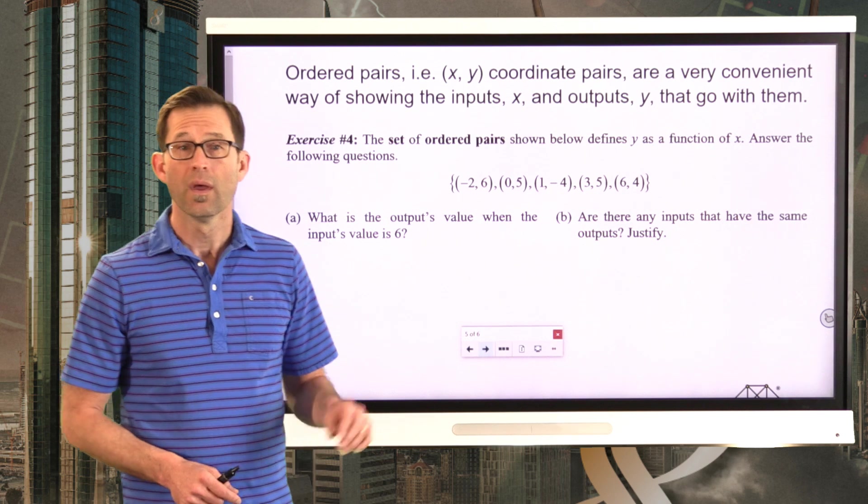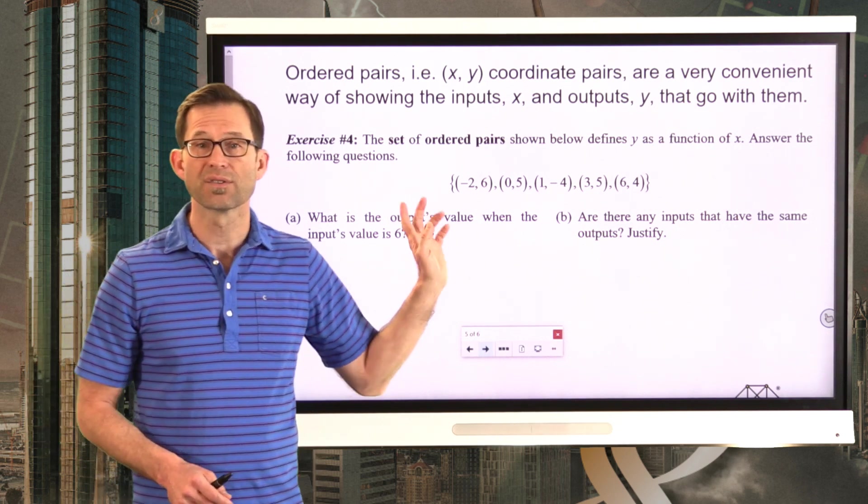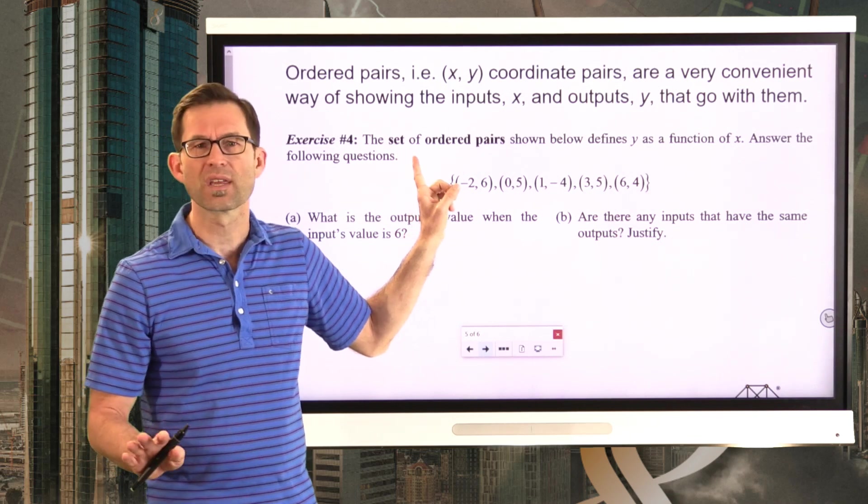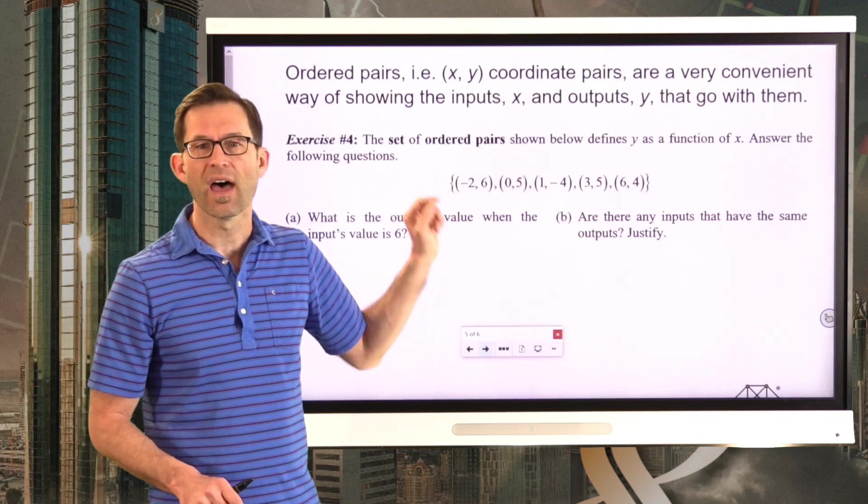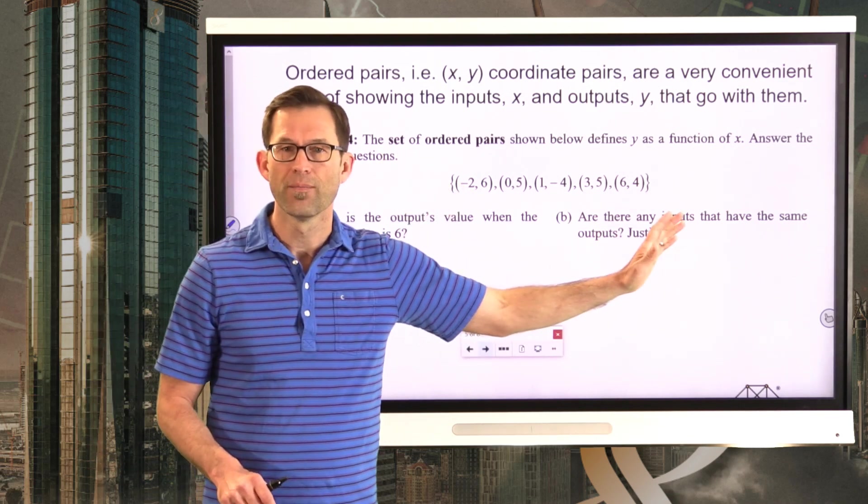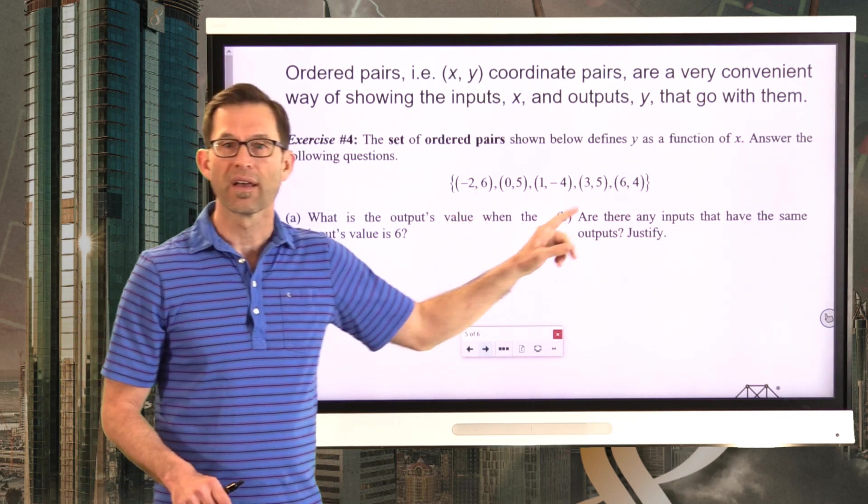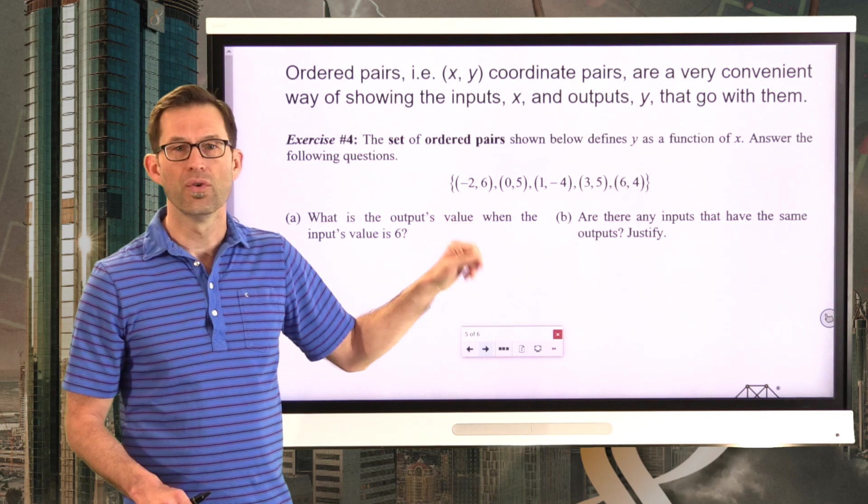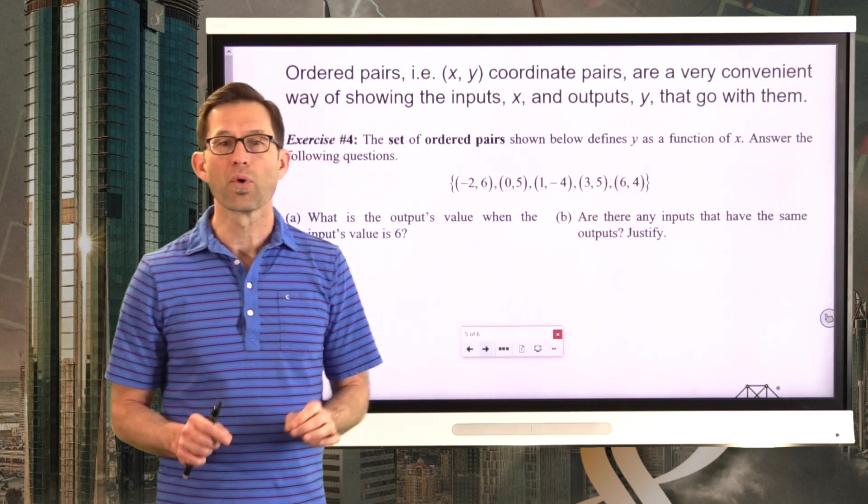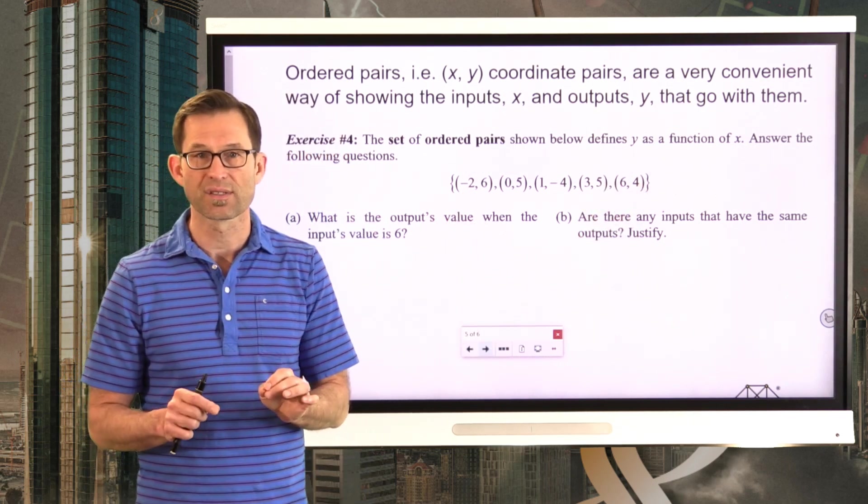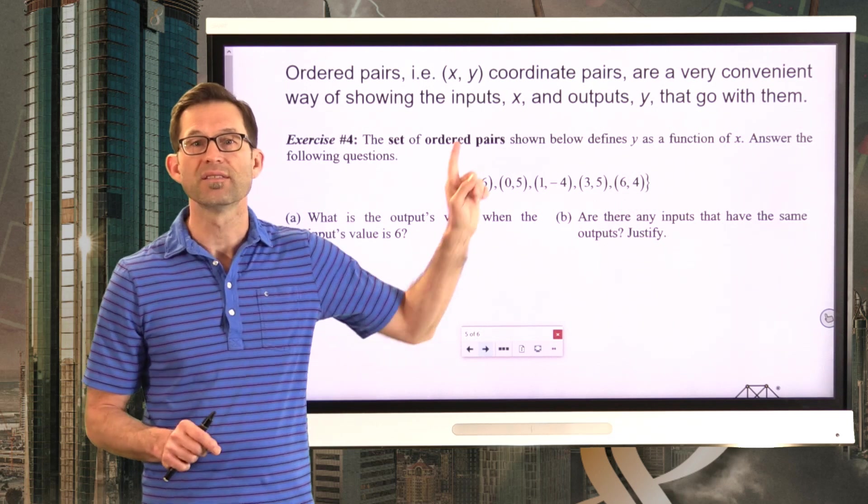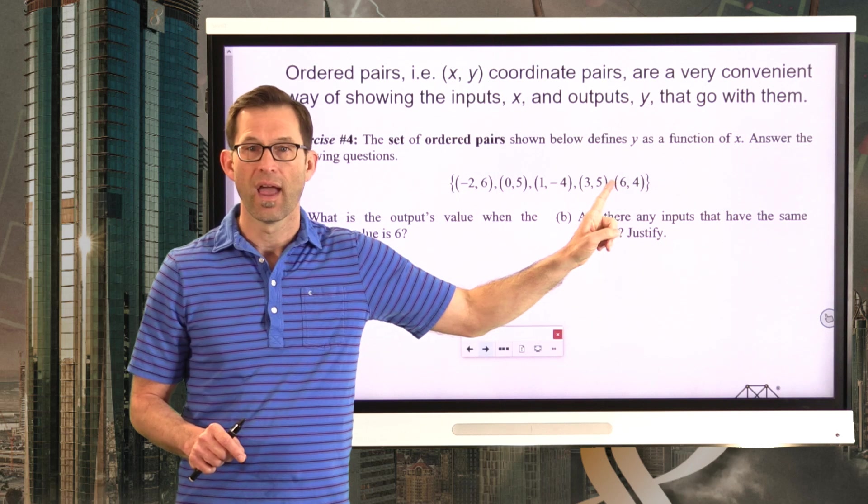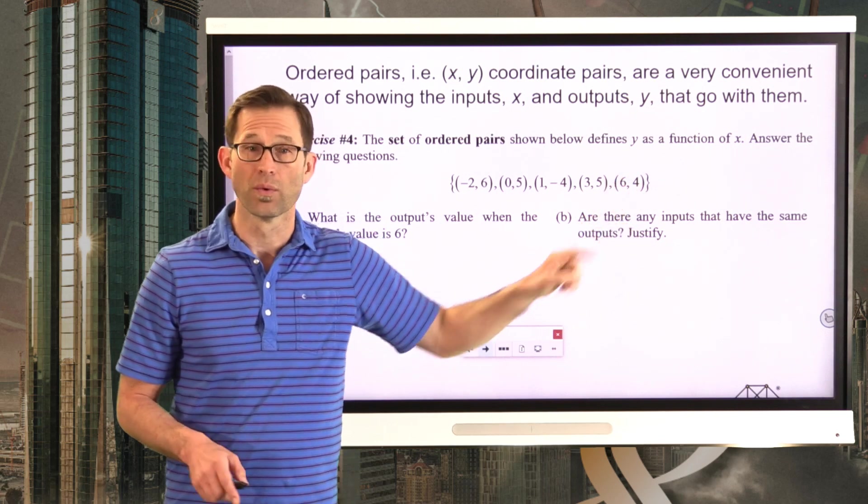Now, this is important. You know, we know that the input value is 6, so we kind of quickly scan this collection or set. A set is just a collection of stuff. This set of ordered pairs. And I see a 6 sitting right there, and I see a 6 sitting right there. So is my answer negative 2, or is my answer 4? Well, remember, the input is 6, and the input is the x coordinate. So that's the one that has an input of 6, and its output is y equals 4.